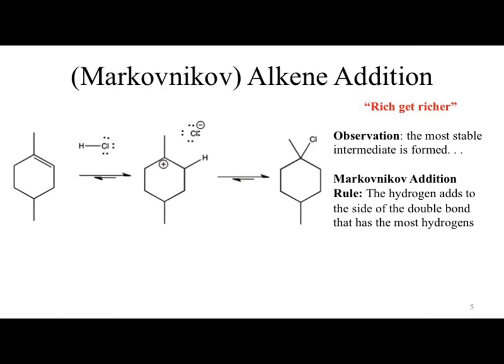What we've been describing is the Markovnikov addition. The cation is going to form on the most substituted or more stable position. Another way to phrase it: the hydrogen adds to the side of the double bond that already has the most hydrogens. A mnemonic some professors use is 'the rich get richer' — the carbon with more hydrogens gains even more hydrogens in the addition reaction.